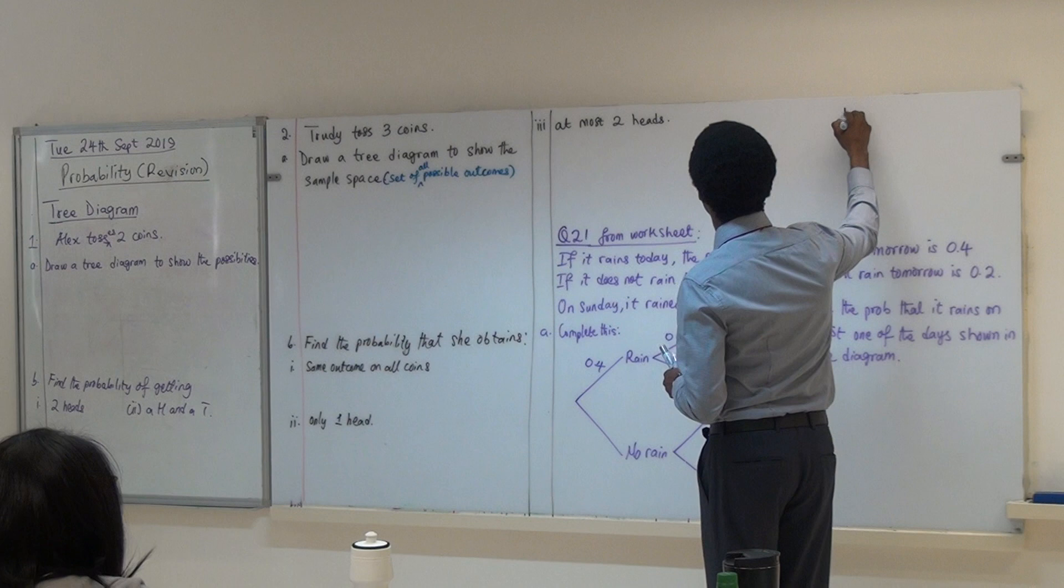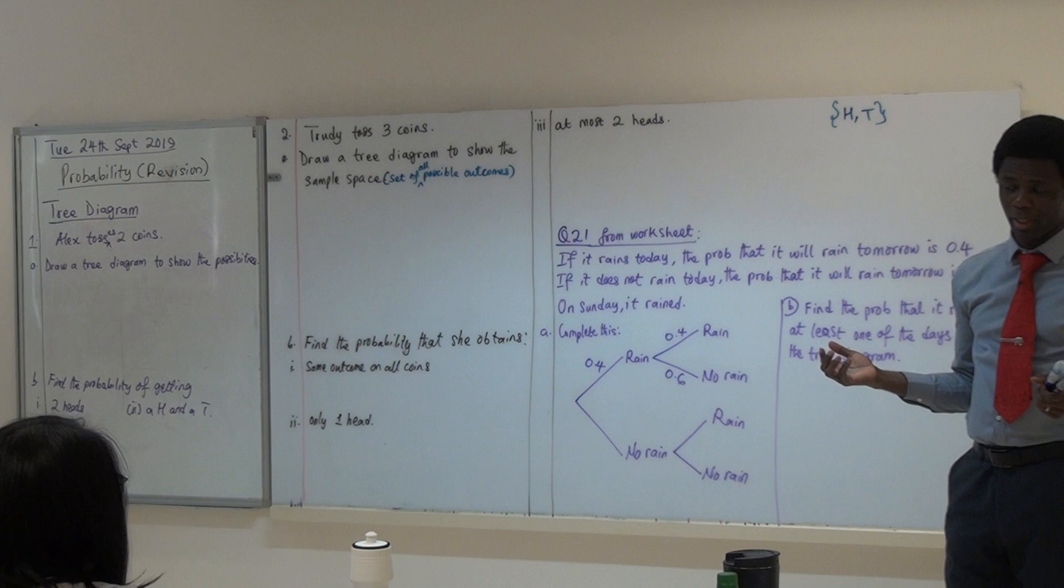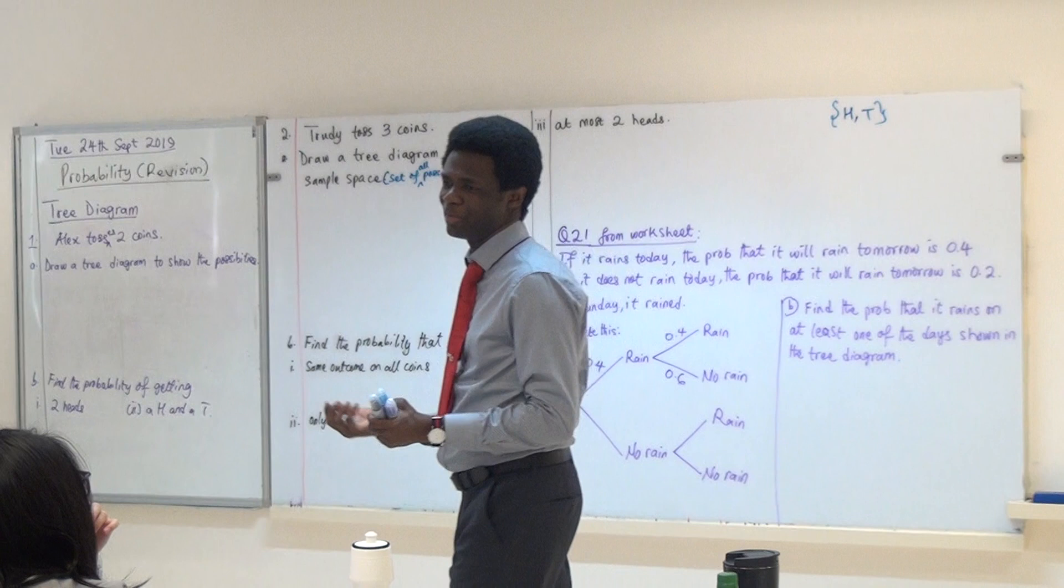If you toss one coin, the possibility is head or tail. Ignore my coin, okay? Usually the question will tell you an unbiased coin because it's possible you have a biased coin.